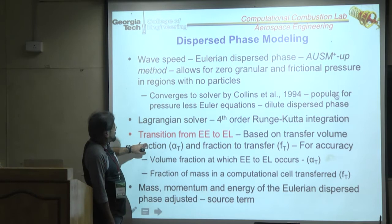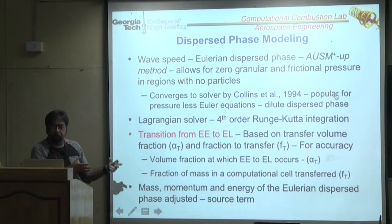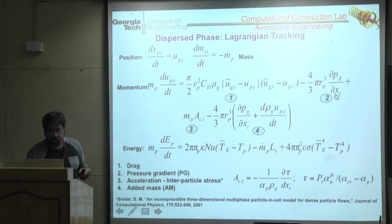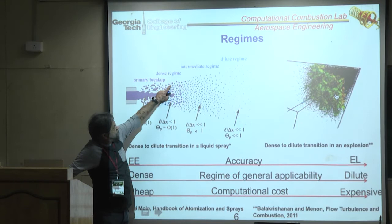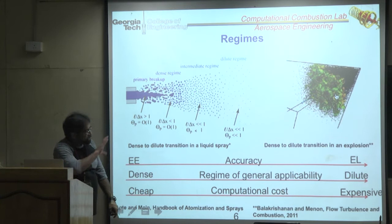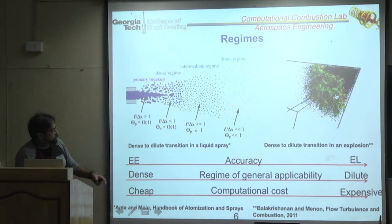The transition criterion is a fraction-based threshold: a certain amount of mass transfers from Eulerian to Lagrangian, effectively seeding the Lagrangian initial condition. Unlike pure Eulerian-Lagrangian which requires an assumed inlet size distribution, here we use the Eulerian solution to generate the Lagrangian particles naturally at the transition point.